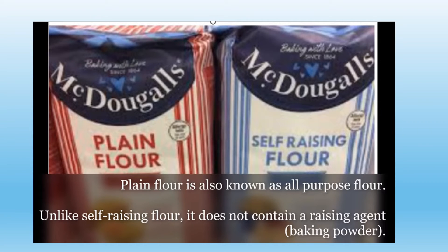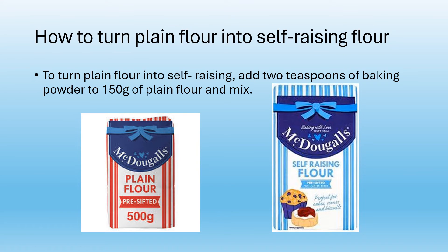Flour is used in cake making. Plain flour, also known as all-purpose flour, does not contain a raising agent such as baking powder, unlike self-raising flour. To turn plain flour into self-raising flour, add 2 teaspoons of baking powder to around 150 grams of plain flour and mix.